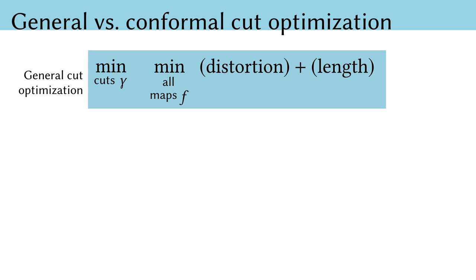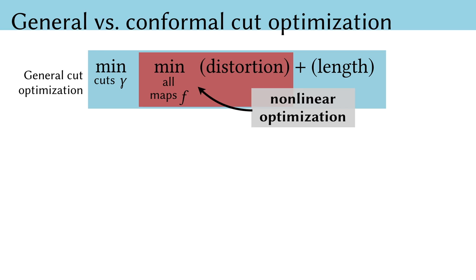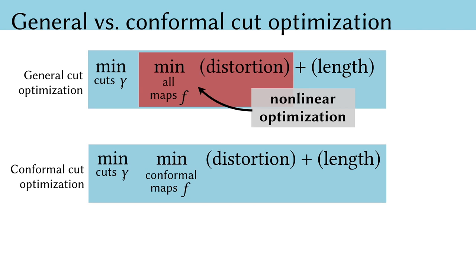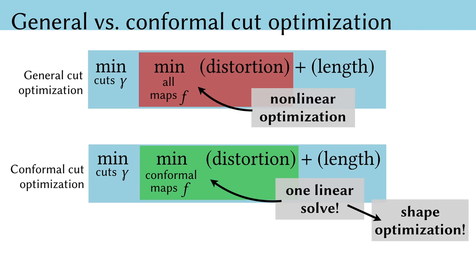I really want to try to share the high-level picture as to why this conformal viewpoint really makes our whole method possible. Suppose we tried to work in the space of all parameterizations. There, we would be asking to place cuts to minimize the distortion of the minimally distorted map. But finding the minimally distorted map is already a hard nonlinear optimization problem. On the other hand, when we formulate the same problem working only in the space of conformal maps, finding the minimally distorted map amounts to simply a single linear solve.